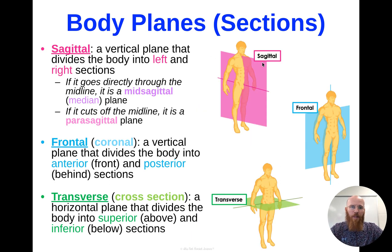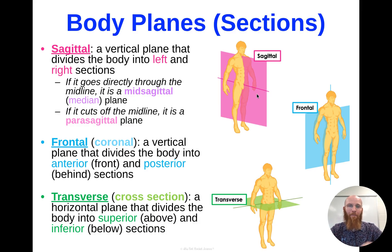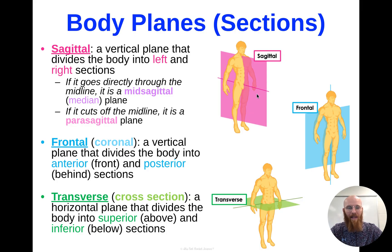Up at the top here in pink, we have our sagittal plane. This is a vertical plane that's going to divide the body into left and right sections. If it gives us equal left and right because it's in the middle straight through our midline, we call that a mid-sagittal plane. But if it sections anywhere that's not that exact center midline of the body, we call that a parasagittal plane. So both fall in that category of sagittal.